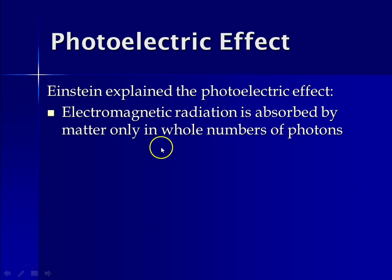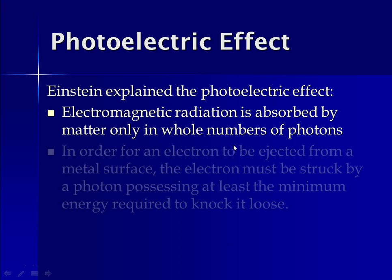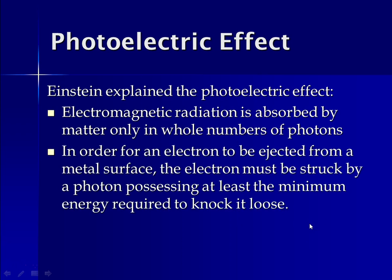So Einstein was able to explain the photoelectric effect, and in fact, that was one of his first papers that he wrote and what he eventually won a Nobel Prize for. So what he said is that electromagnetic radiation is absorbed by matter in whole numbers of photons, and in order for an electron to be ejected from the surface of the metal, it must be struck by the photon that has that minimum energy required to knock it loose. So the energy of that photon is still described by the equation E equals H, which is Planck's constant, times nu, which is the frequency.